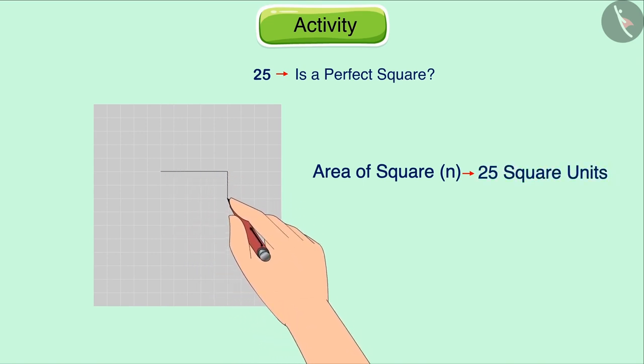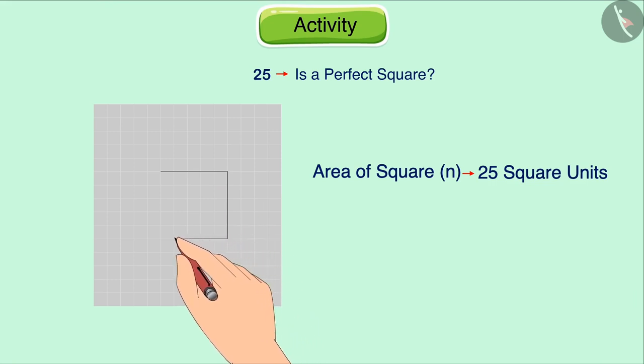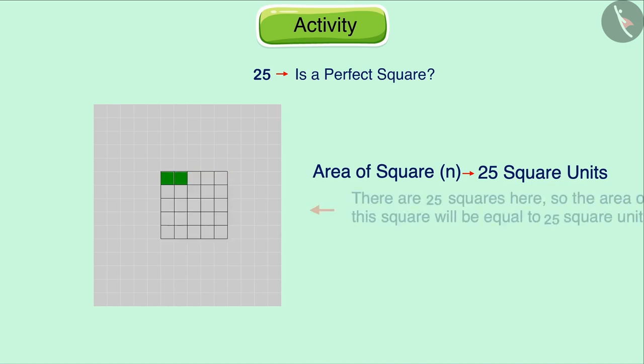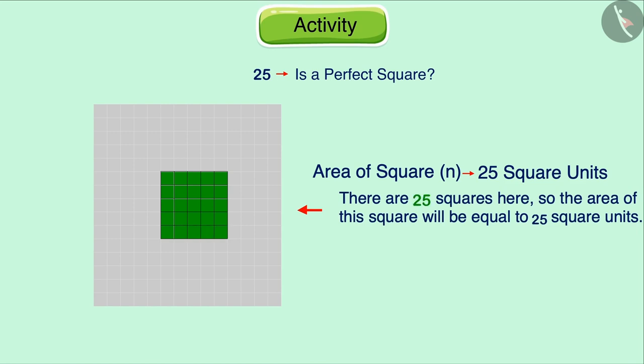Yes, we can draw a square whose area is equal to 25 square units. Note that the area of the smallest square on a graph paper is 1 square unit. The area of this square is equal to the sum of the area of all these squares. There are 25 such squares here, so the area of this square will be equal to 25 square units.